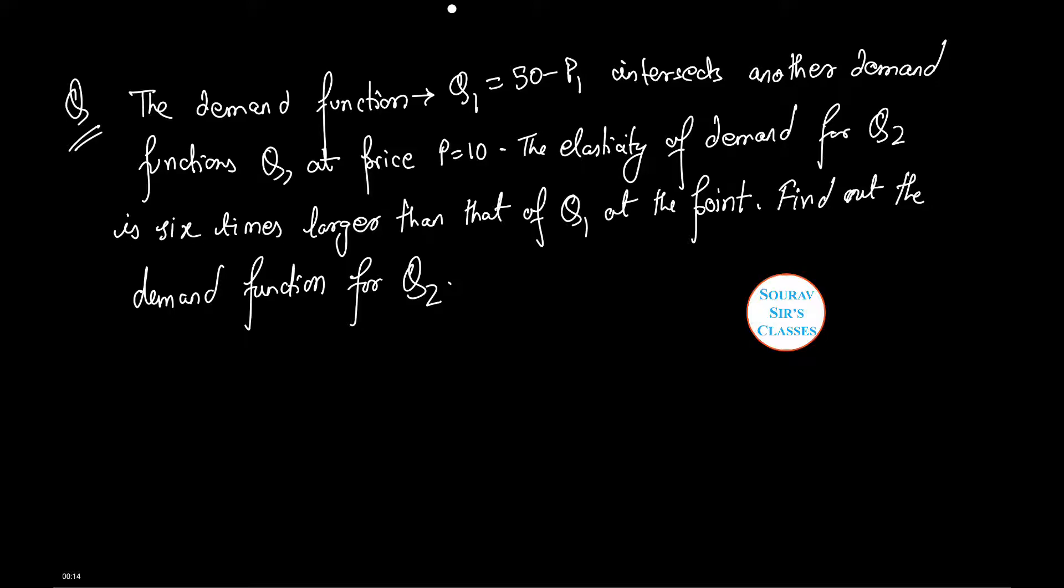The demand function Q1 equals 50 minus P1 intersects another demand function Q2 at price P equals 10, and elasticity of demand for Q2 is 6 times larger than that of Q1 at the point. We need to find out the demand function for Q2.